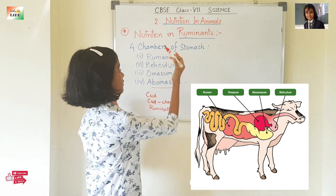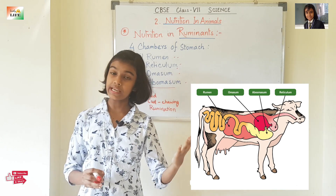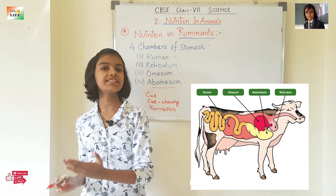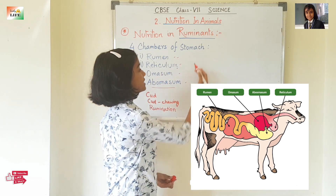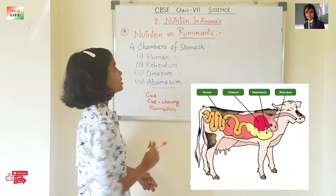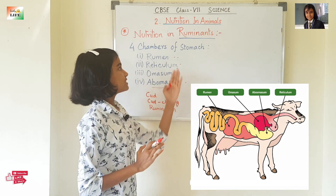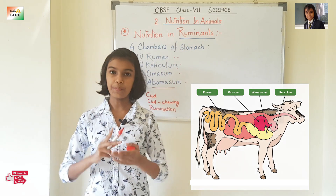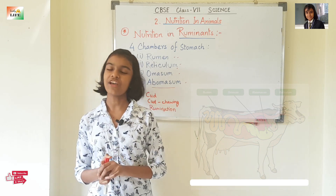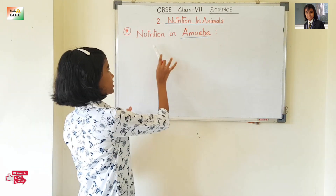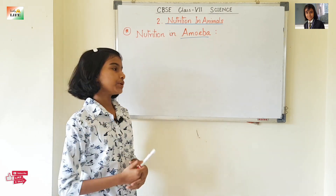The four chambers of the stomach represent the only significant difference between the human digestive system and the ruminant digestive system — ruminants have four chambers specifically for digesting cellulose. That concludes the digestive system of ruminants. Now we are going to learn about nutrition in amoeba.